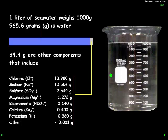This figure is courtesy of Frank Granshaw, Artemis Sciences. If we were to take one liter of seawater, it weighs about 1,000 grams. About 965 grams is water. The remaining 34.4 grams, if we were to test it and figure out exactly what's in it, includes chlorine ions, sodium ions, sulfate, magnesium, bicarbonate, calcium, potassium, and some other stuff.